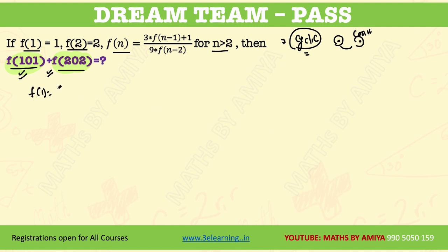Given F(1) is equal to 1, yes cyclic should be manual. F(2) should be 2 given. So if we go for F(3), we have 3 into F(2) plus 1 into 9 if 2 functions less is 1. This one is 6, 7, 7 by 9.